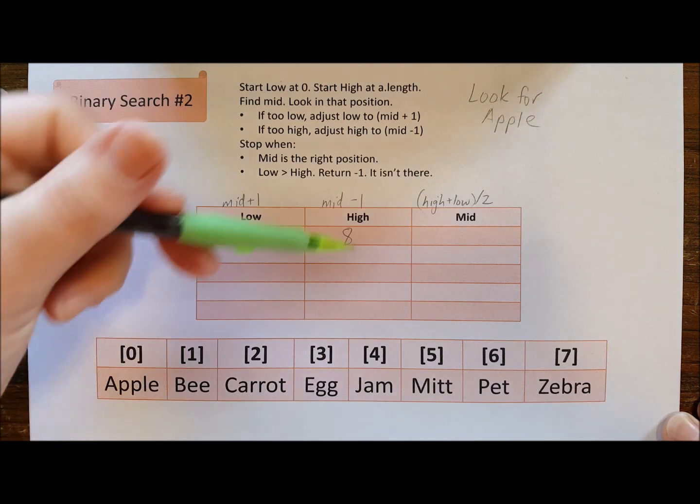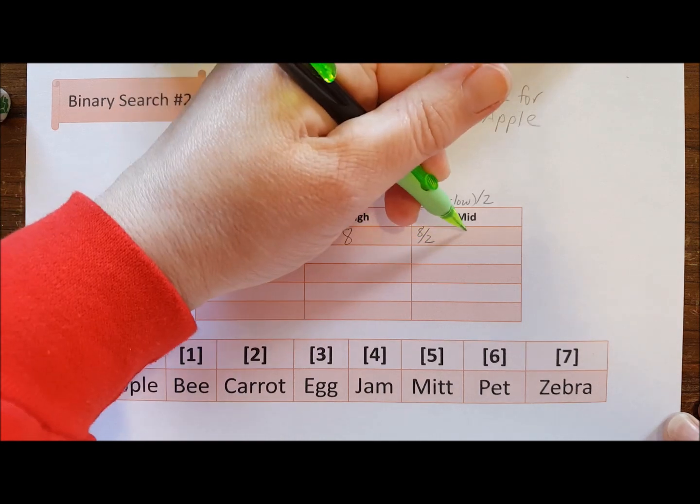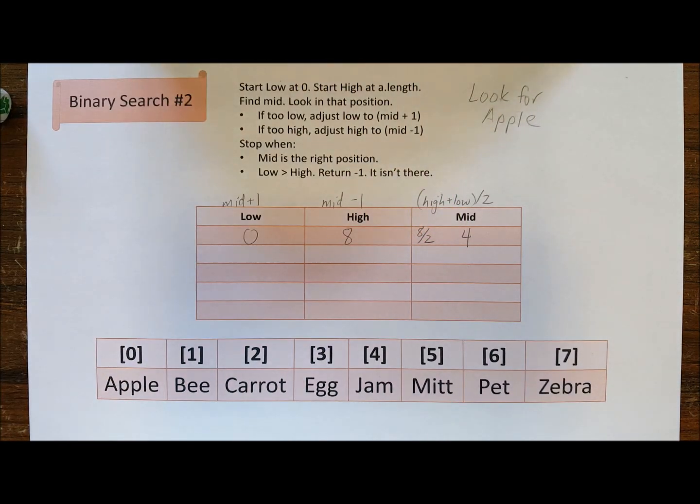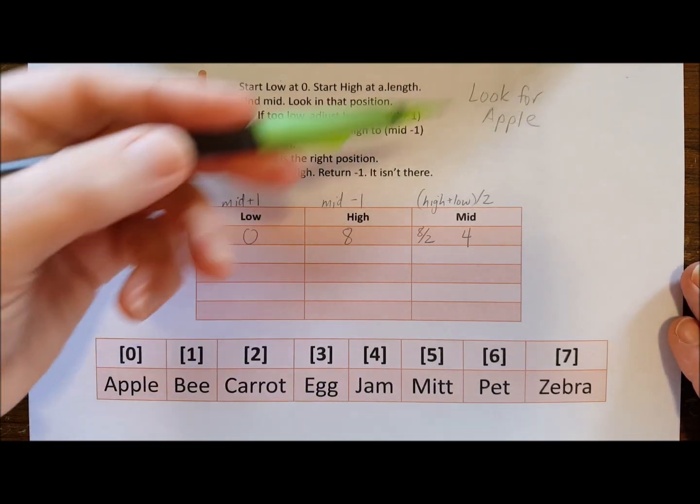Then what we're going to do is add the two numbers together. We are going to get eight when we do that and then divide it by two, so then we're going to be looking in spot four. So spot four, I'm looking for apple.